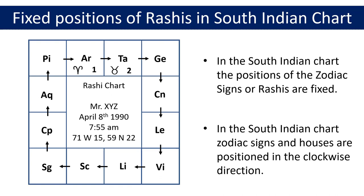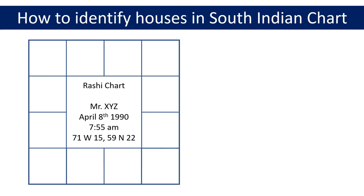The next thing to be aware of is that the positions of the houses in the South Indian chart are not fixed. Let's focus on how to identify houses in the South Indian chart. Since houses are not fixed, the first house location is not fixed either — the position of the ascendant or lagna tells you the location of the first house. You need to look for the ascendant, typically written in abbreviated form as ASC or the word lagna, to figure out the first house location.